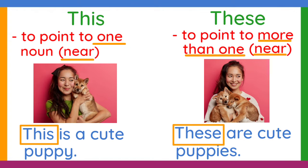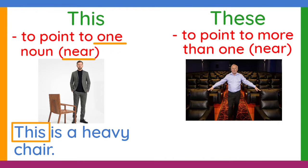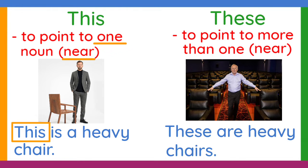Another example: this is a heavy chair. This is used in the sentence because the person is near the chair, and he is only talking about one chair. Now, how about these? We can say, these are heavy chairs. We use these because the person is near more than one chair.